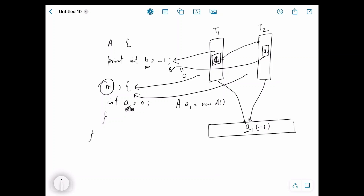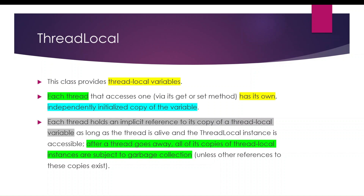But many times we cannot refactor the existing logic to use local variables — it is not always possible. So what happens when we need a value that is specific to a thread? ThreadLocal is a class in the java.lang package, and it provides thread-local variables — values or variables which are local to a particular thread. Just as we define an int, a float, or a HashMap, we can create a ThreadLocal variable, and each thread that accesses it gets a separate, independently initialized copy.